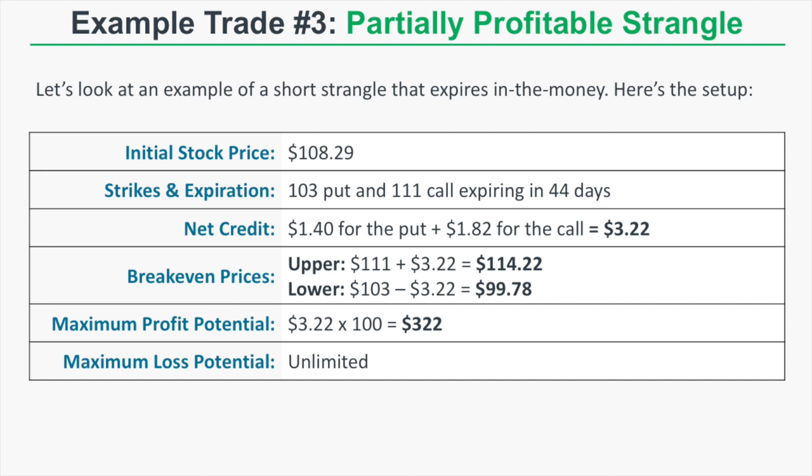In the last example, we look at a partially profitable strangle where the stock price expires beyond one of the short strikes but not enough to make the trade unprofitable. The initial stock price is $108.29, and we're selling the 103/111 strangle expiring in 44 days, collecting a credit of $3.22. That brings our break-even prices to $99.78 on the downside and $114.22 on the upside, with a maximum profit potential of $322.